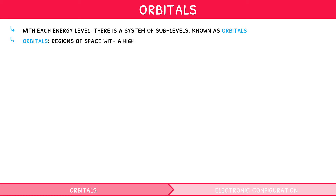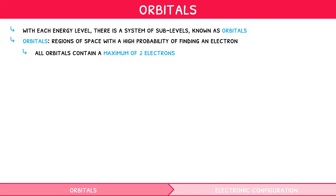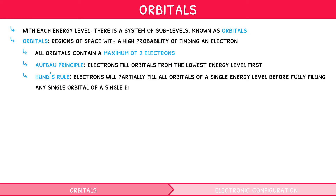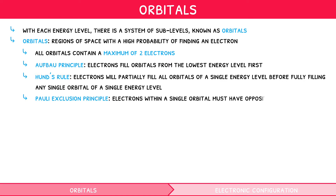Orbitals are regions of space with a high probability of finding an electron. Orbitals can come in many different shapes, and there are several key properties you need to be aware of. All orbitals can contain a maximum of two electrons. The Aufbau Principle states that electrons fill orbitals from the lowest energy level first. Hund's rule states that electrons will partially fill all orbitals of a single energy level before fully filling any single orbital. The Pauli exclusion principle states that electrons within a single orbital must have opposite spins from one another.